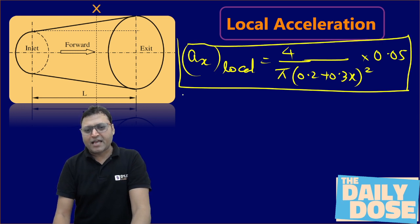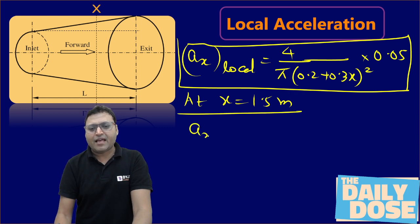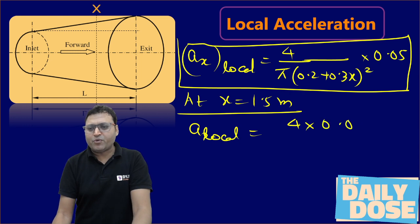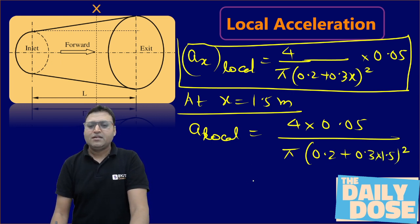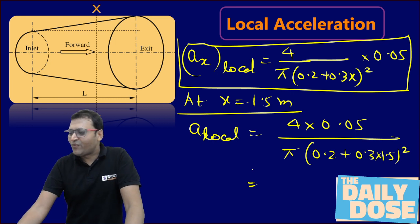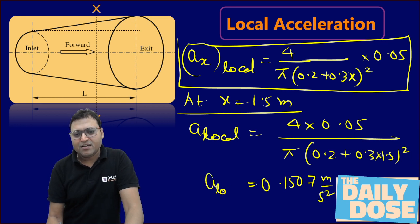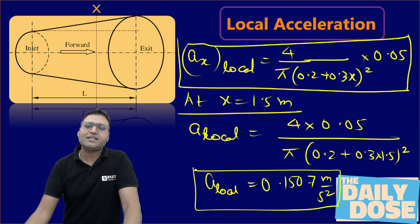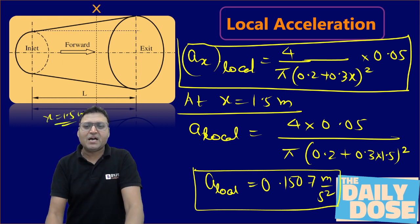At x equals 1.5 meters, the local acceleration is 4 × 0.05 divided by π × (0.2 + 0.3 × 1.5)². Simplifying this gives a value of 0.1507 meters per second squared. That is the magnitude of local acceleration at x equals 1.5 meters from the upstream end.